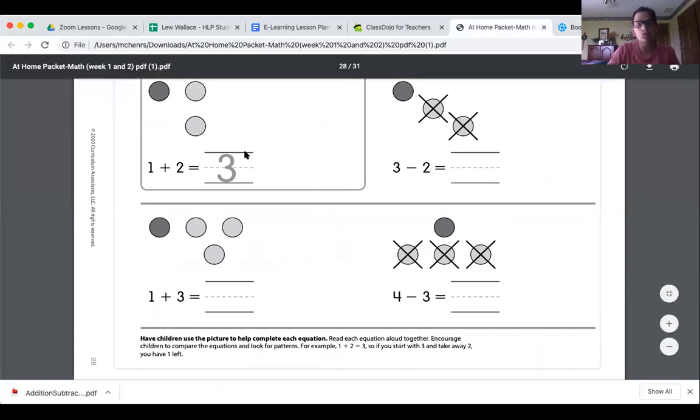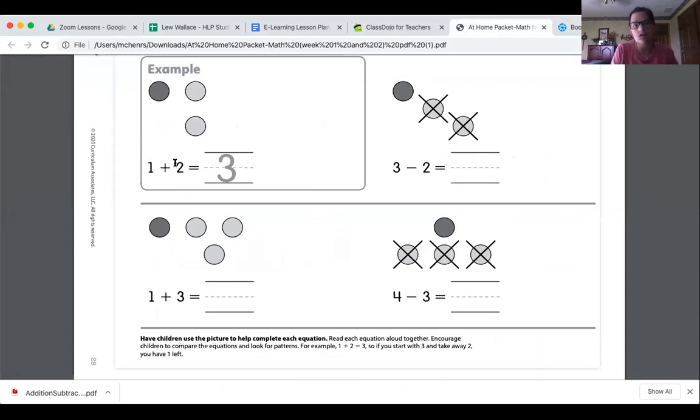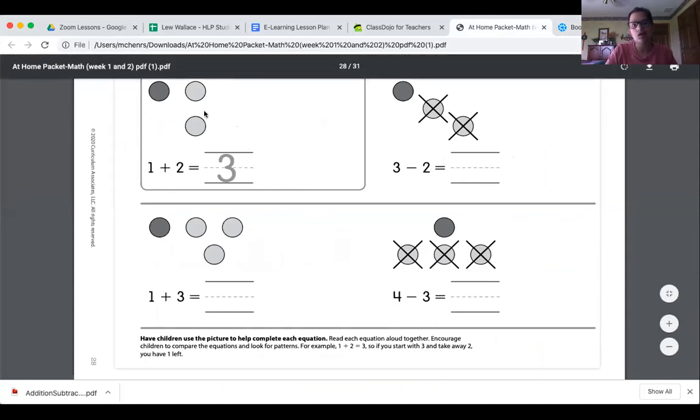So the first example is talking about adding. There's Gus the Plus, and we remember that whenever we see Gus the Plus, we're making things bigger. We're adding to whatever we had. So we started with one, and we added two more. So since we're adding, we are going to see how many we have all together. We started with one. We added two.